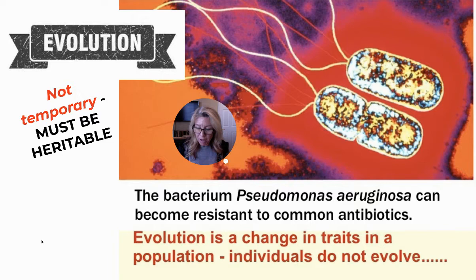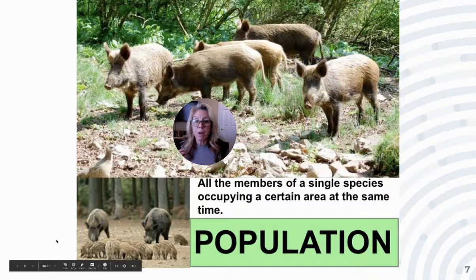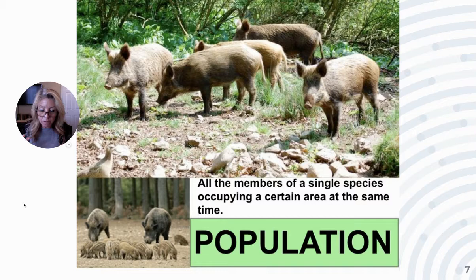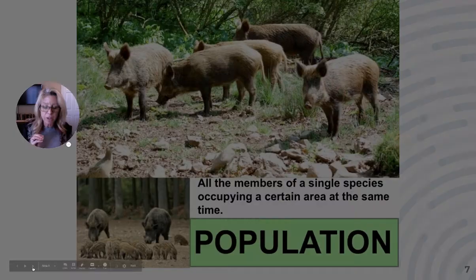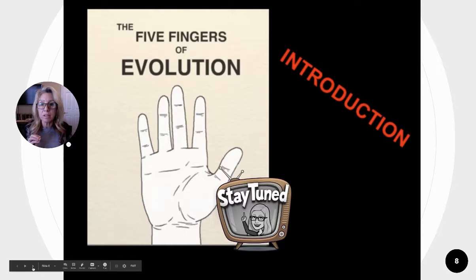So number one, down in your notes: a temporary change or changes in an individual's lifetime is not evolution — it must be heritable. Individuals don't evolve; populations evolve. And specifically when you talk about populations evolving, you're talking about changes in allele frequencies — the change in allele frequencies in a population over time.